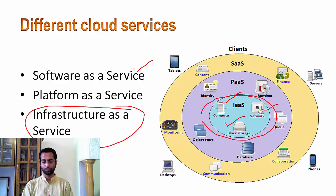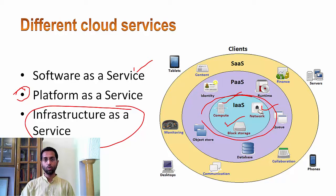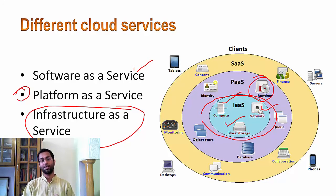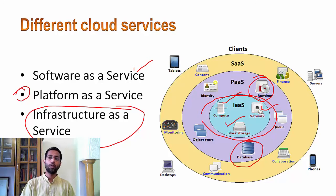Another service available on a cloud platform is called Platform as a Service. A platform offers necessary computing facilities like application runtimes, programming libraries, etc., which can be used by application developers to create new applications. The key difference here is that the infrastructure is managed by the platform provider. A Platform as a Service cloud may offer application runtimes like Java or Python, a database as a service, or the entire stack on which you can build applications.